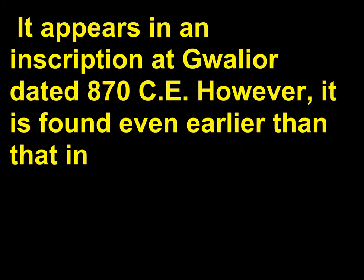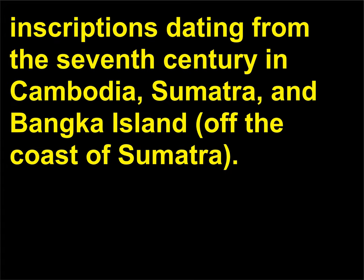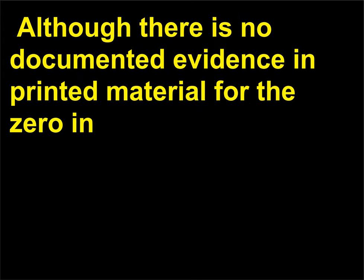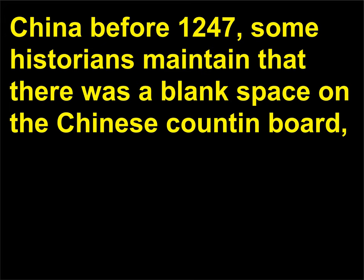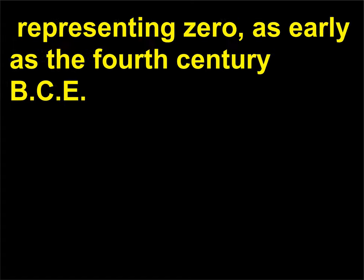Zero appears in an inscription at Gwalior dated 870 CE. However, it is found even earlier in inscriptions dating from the 7th century in Cambodia, Sumatra, and Banka Island, off the coast of Sumatra. Although there is no documented evidence in printed material for the zero in China before 1247, some historians maintain that there was a blank space on the Chinese counting board representing zero as early as the 4th century BCE.